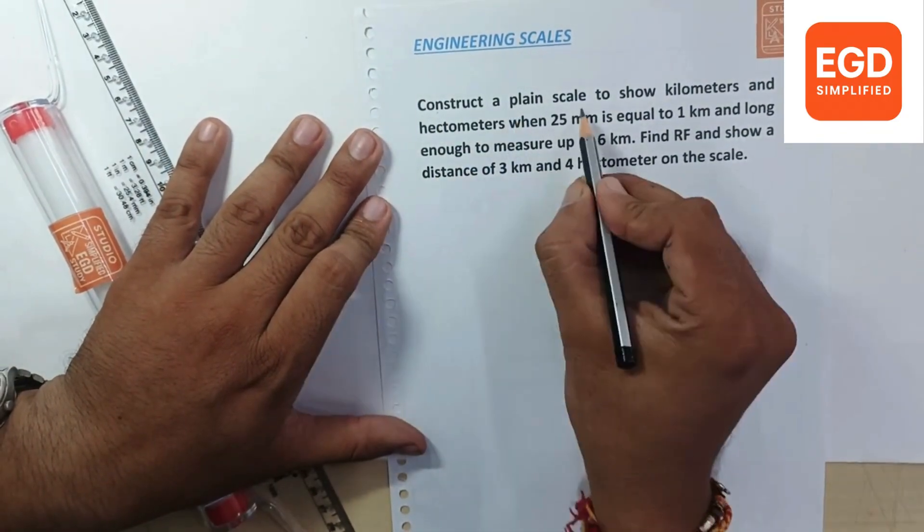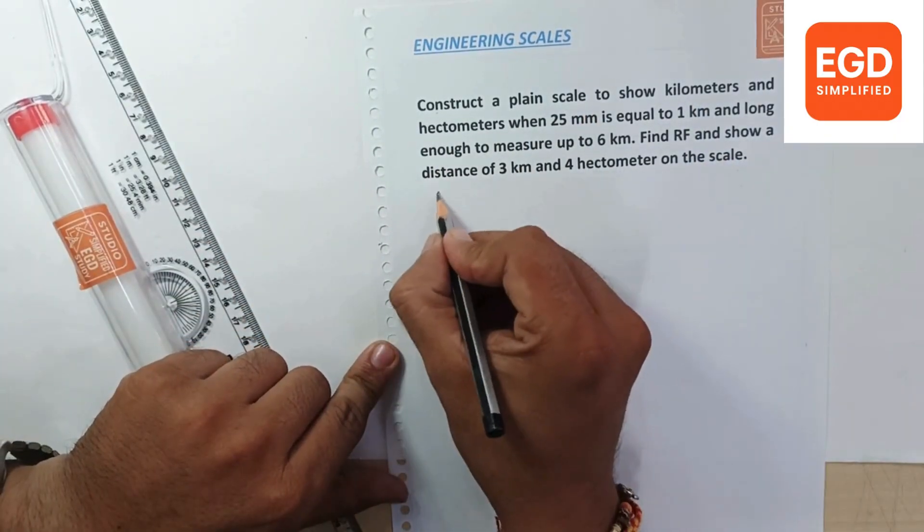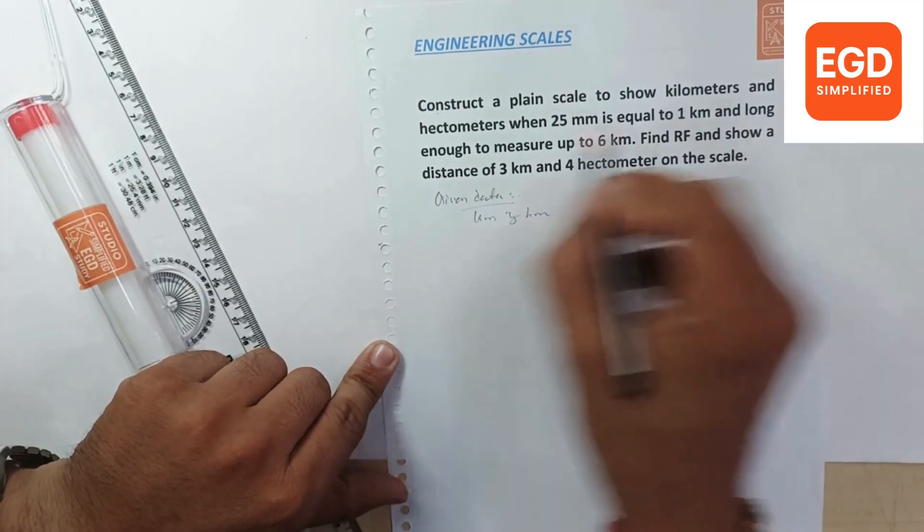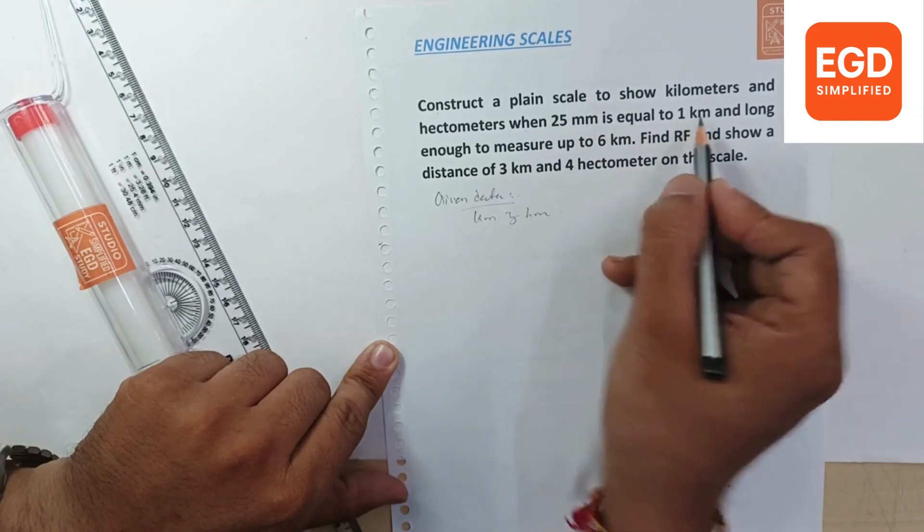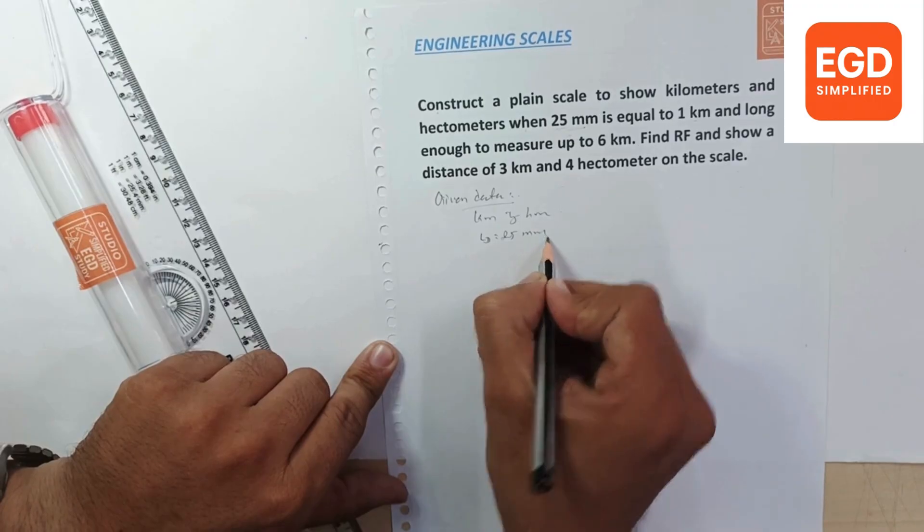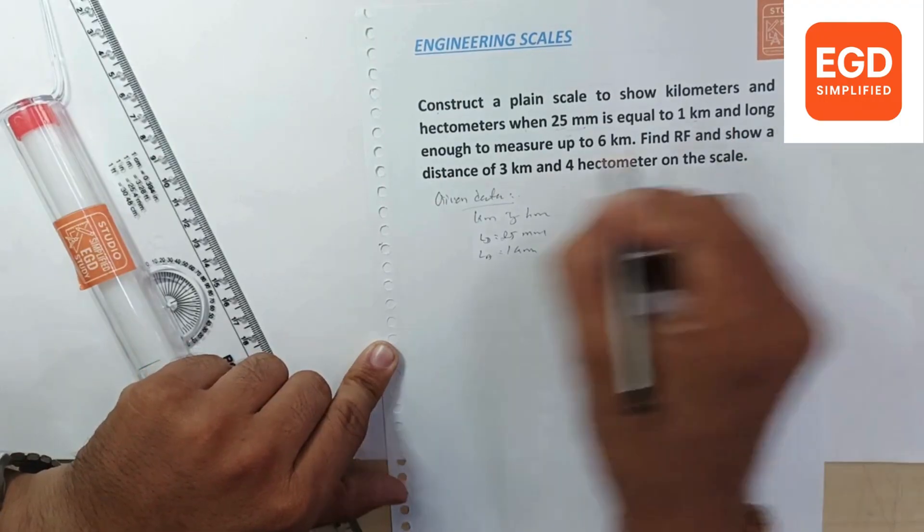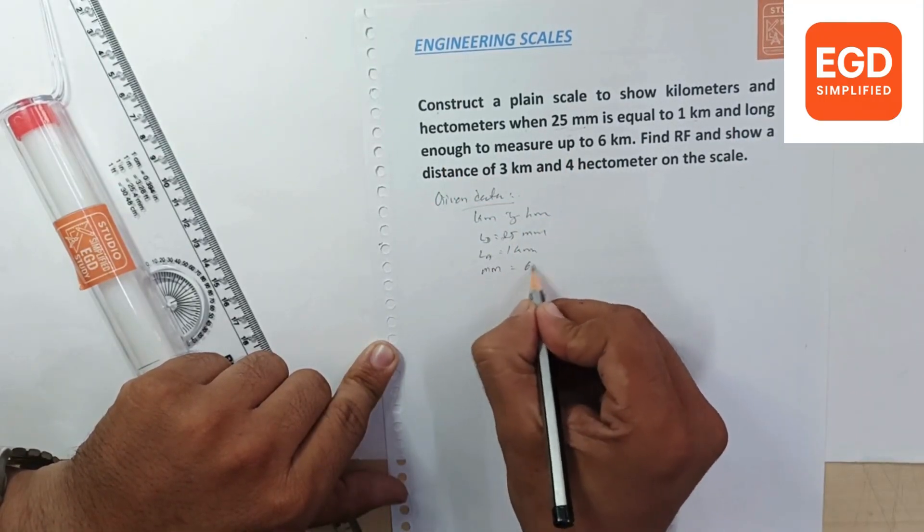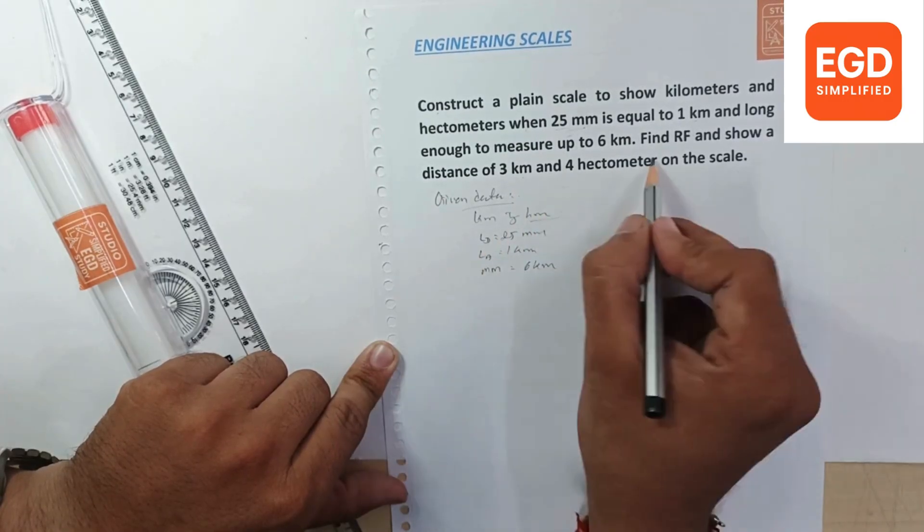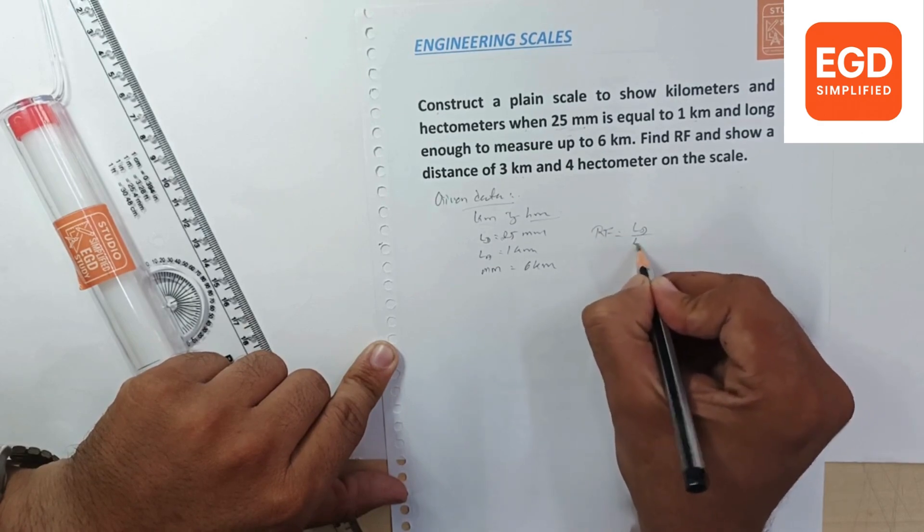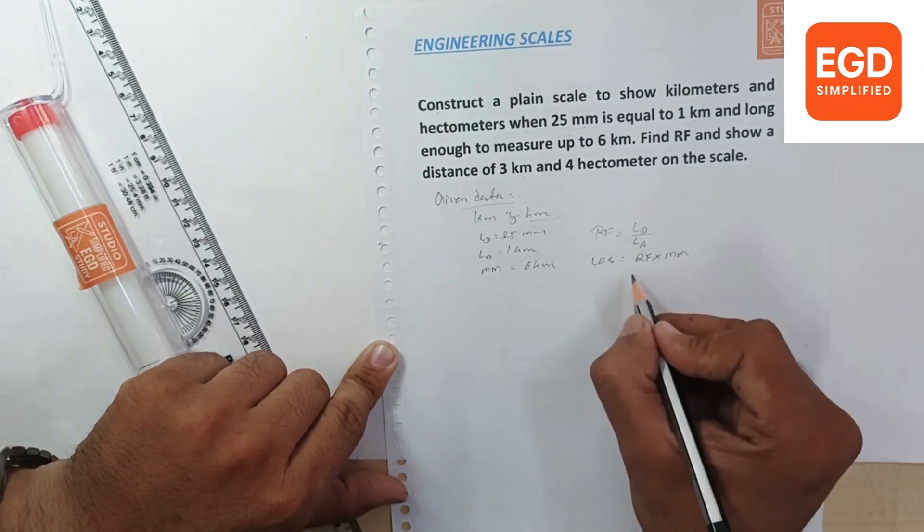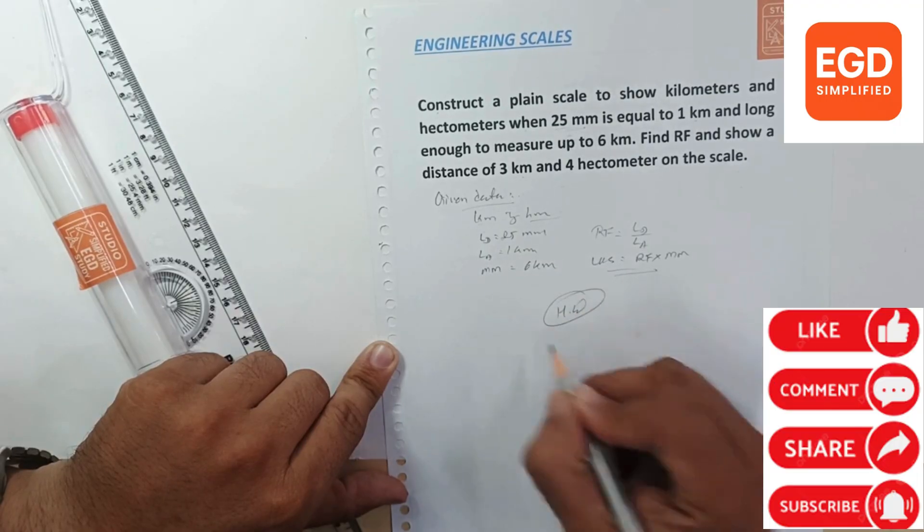Then the problem: construct a plane scale to show the kilometers and hectometers. Given data: when 25 mm equals 1 kilometer, drawing length is 25 mm and actual measurement is 1 kilometer. Long enough to measure means maximum measurement is given, 6 kilometers. Find the RF and show the distance of kilometers and hectometers. We can calculate RF equals drawing length upon actual length. Length of scale equals RF into maximum measurement. So this problem will be in homework.